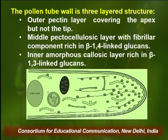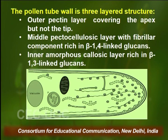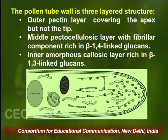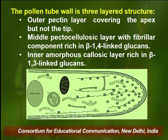The dictyosomes produce secretory vesicles mainly directed to extending the tip of the tube, where they provide new plasma membrane and wall components. There is no wall at the very tip of the pollen tube — only plasma membrane — as the presence of wall would give rigidity. The pollen tube wall is otherwise a three-layered structure: the outermost is the pectin layer covering the apex but not the tip; the middle is a pecto-cellulosic layer rich in β-1,4-linked glucans; and the inner amorphous callosic layer is rich in β-1,3-linked glucans.